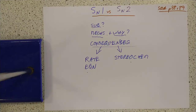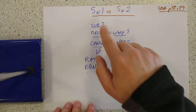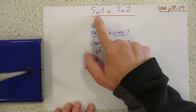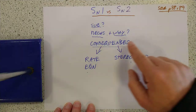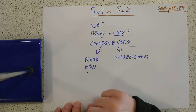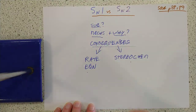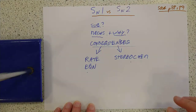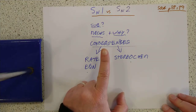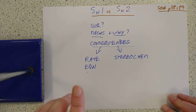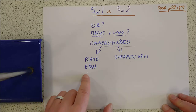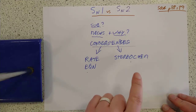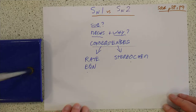Welcome back to Advanced Higher Chemistry. Today I'd like to look at SN1 reactions versus SN2. I'd like to have a look at what substitution reactions are, the mechanisms behind these two approaches, why one happens compared to the other, and the consequences of the reaction style on the rate equation and also the stereochemistry of the product that you make.